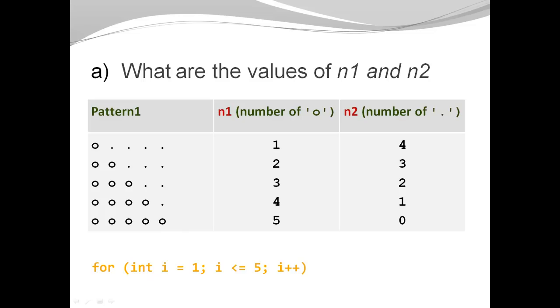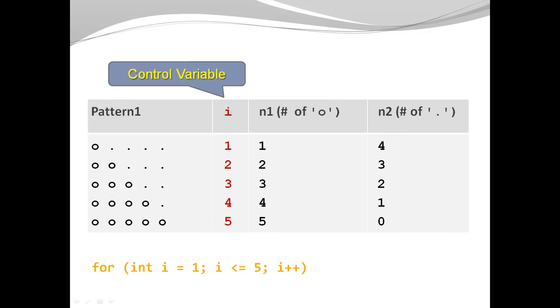And in each of my rows, my i takes on the values 1, 2, 3, 4, and then 5. So here, I have my control variable from the outer loop. And I notice that my control variable is exactly the same as n1, exactly the same as the number of circles. That is very convenient. Now the question is, what about n2?